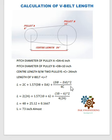After putting the values in the above equation, we have the length of the V-belt which is almost equal to 73 inches. Thank you.